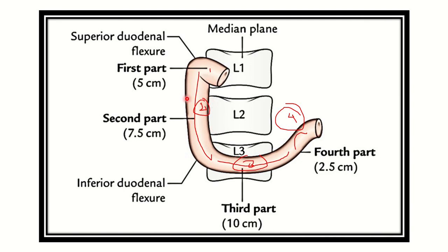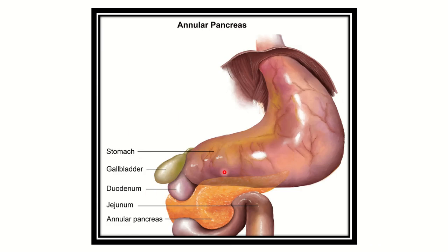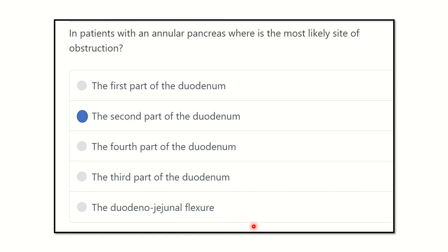We can see that the annular pancreas is located at this place — the second part of the duodenum. Here is the first part, here is the second part, here is the third part, and then the fourth part. So our answer is that the annular pancreas is located at the second part of the duodenum. The annular pancreas, or ring-shaped pancreas, encircles the whole diameter of the second part of the duodenum.